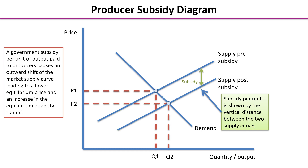When the subsidy is applied to the market, this shifts the supply curve to the right because it lowers the costs of production. The vertical distance between the two supply curves is actually the subsidy per unit — that's really important to note. Because the costs of production have been lowered, we end up at a new market equilibrium: a lower price of P2 and a greater output at Q2.